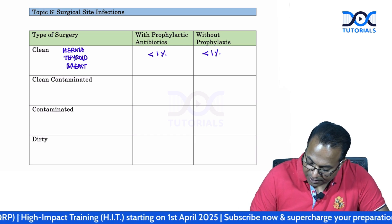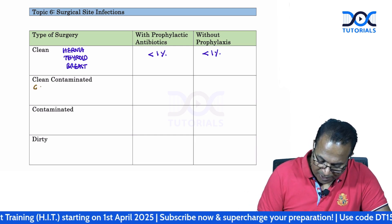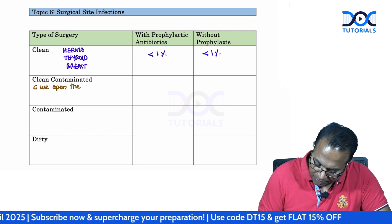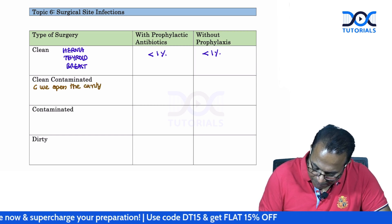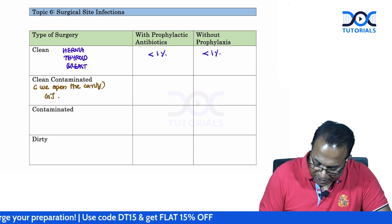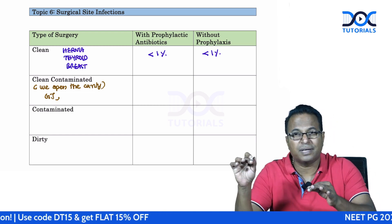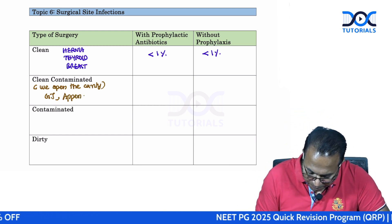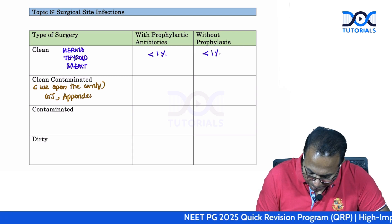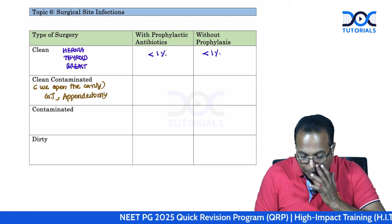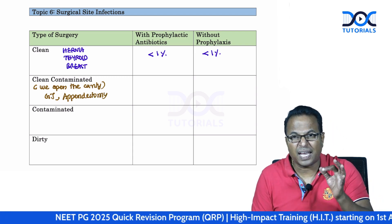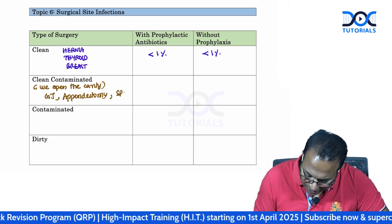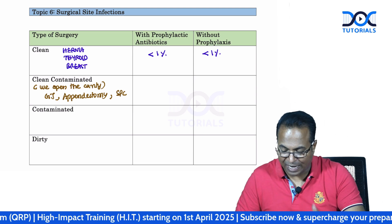Clean contaminated surgery is when we are opening a cavity. For example, I am going to do a GJ — opening the stomach and jejunum. Or I am going to do an appendectomy, cutting the appendix. These are all clean contaminated surgeries where I am opening a cavity that is uninfected. A suprapubic catheter is also a clean contaminated surgery.